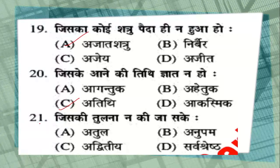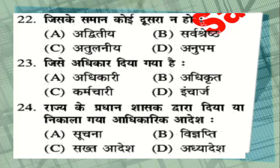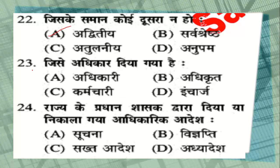Question number 21: जिसकी तुलना न की जा सके — options: अतुल, अनुपम, अद्वितीय, या सर्वश्रेष्ठ. The correct answer is अतुल. Question number 22: जिसके समान कोई दूसरा न हो — options: अद्वितीय, सर्वश्रेष्ठ, अतुलनीय, या अनुपम. The correct answer is option 1, अद्वितीय. Question number 23: जिसे अधिकार दिया गया हो — options: अधिकारी, अधिकृत, कर्मचारी, या इंचार्ज. The correct answer is अधिकृत.